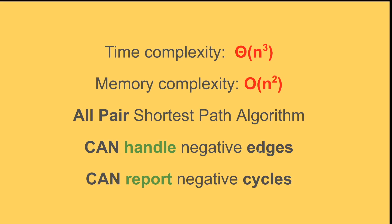This algorithm handles negative edges — that's fine. However, it does not work correctly if there are negative cycles, because the shortest path cannot be defined when a negative cycle is reachable from your source and target nodes. You can modify the algorithm slightly to detect negative cycles if needed, and that's it — I hope you liked this video, let me know if you have any questions and I'll see you in the next ones.